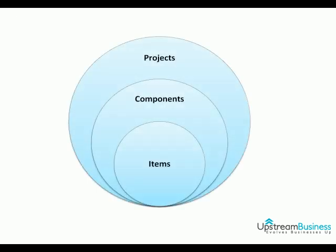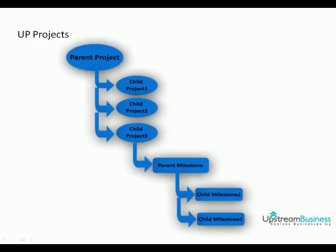Projects, components and items are three major dimensions that are well organised in UpProjects in order to best manage your project portfolio and your business. UpProjects enables you to build nested projects, which means parent projects can have unlimited number of child projects. UpProjects also allows you to decompose each project into components and child components, giving you absolute flexibility in organising and structuring your larger pieces of work across multiple components, resources and even child projects.